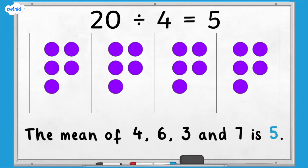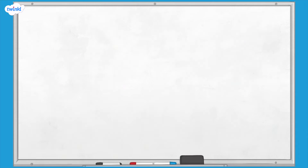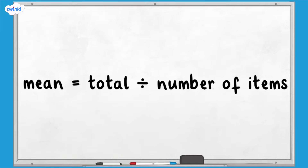So the mean of 4, 6, 3 and 7 is 5. We can write this as a formula: mean equals total divided by number of items.